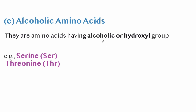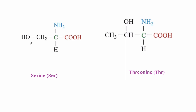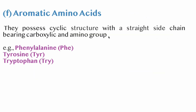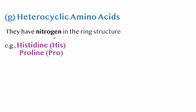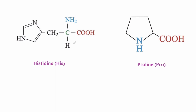Alcoholic amino acids have a hydroxyl (OH) group; examples are serine and threonine. Aromatic amino acids possess a cyclic structure with a straight chain bearing carboxylic and amino groups; examples are phenylalanine, tyrosine, and tryptophan — all of which have ring structures. Heterocyclic amino acids have nitrogen in the ring structure; examples are histidine and proline.